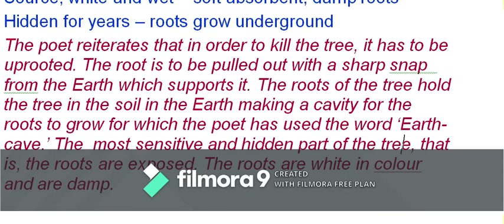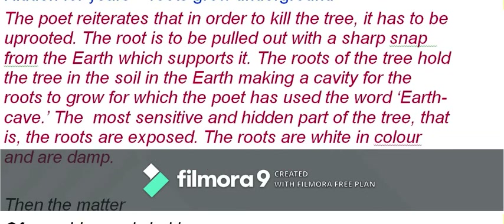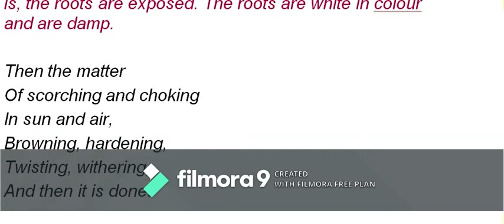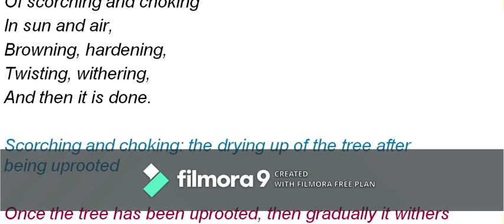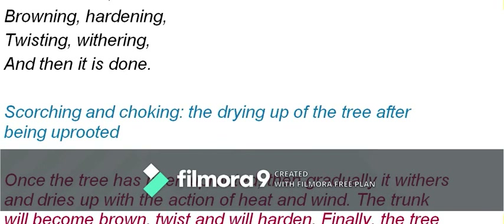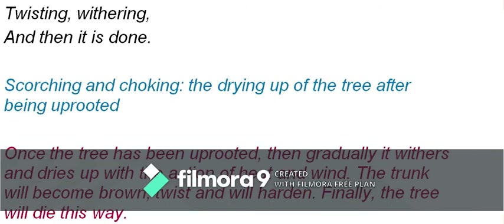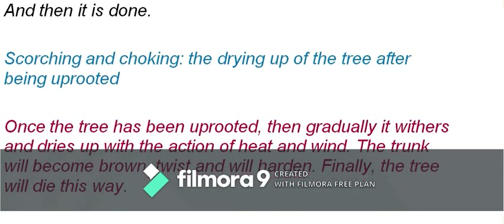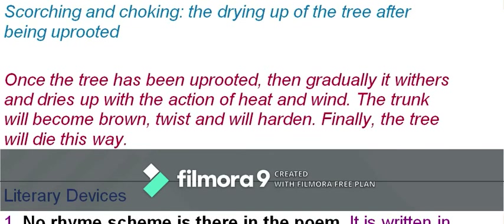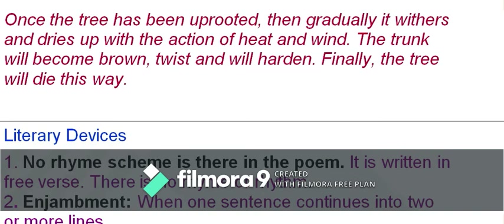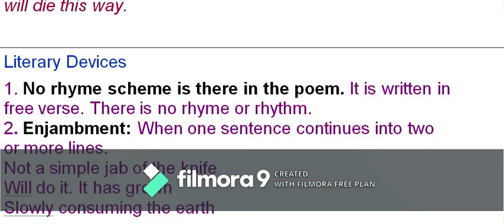The fourth and final stanza reads: 'Then the matter of scorching and choking in the sun and air, browning, hardening, twisting, withering — and then it is done.' Once uprooted, the roots can no longer absorb water from the soil, so the tree dries up. With the action of heat and wind, the trunk becomes brown, twists, and hardens. Finally the tree dies.